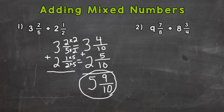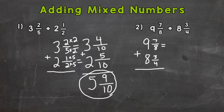For number two, we have nine and seven-eighths plus eight and three-fourths. I'm going to line up the problem: nine and seven-eighths plus eight and three-fourths. We do not have a common denominator, so we're going to need to rename with a common denominator.